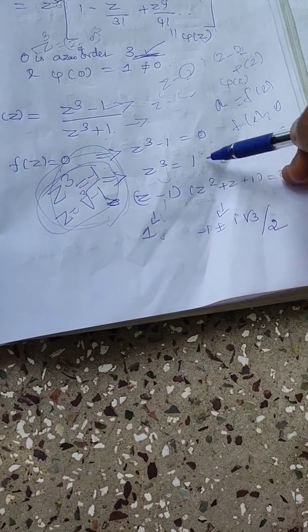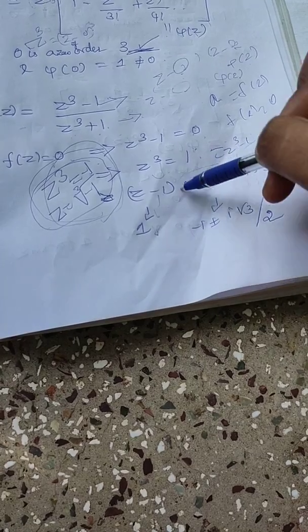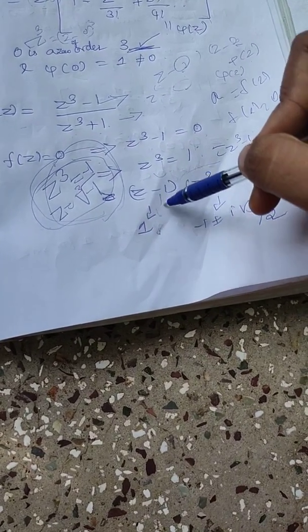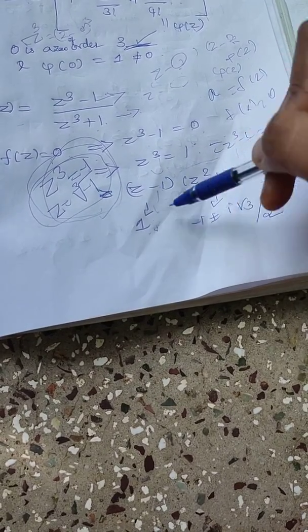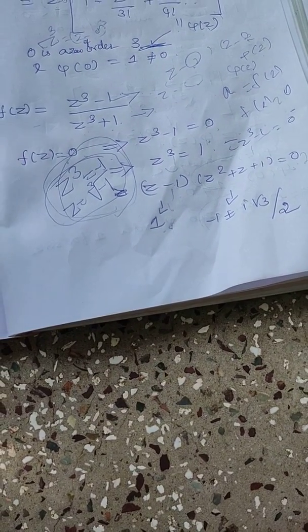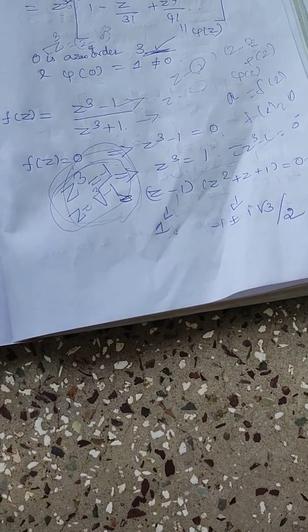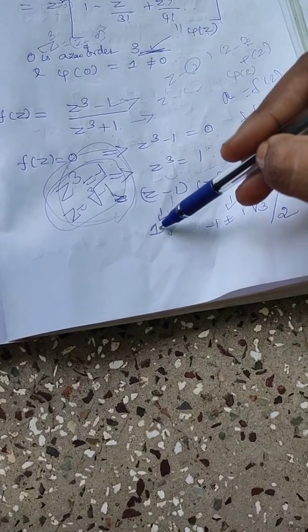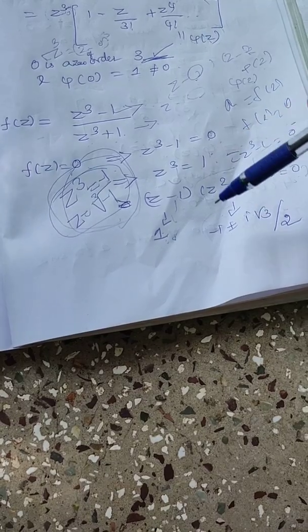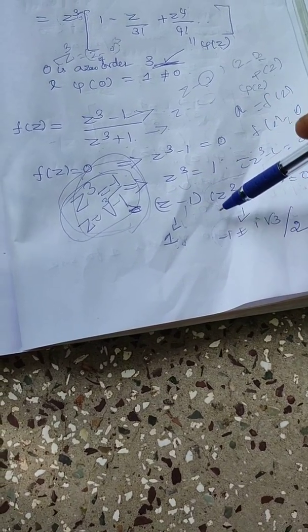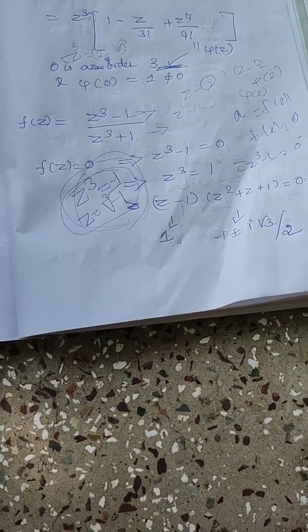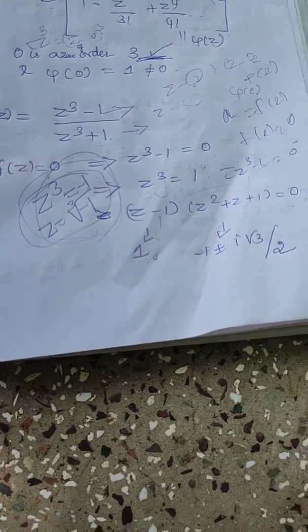So Z cube minus 1 is equal to 0. So here I have expressed Z cube minus 1 in terms of these two polynomials. And Z minus 1 is equal to 0. This is also equal to 0. Therefore Z is equal to 1. The roots of this equation are minus 1 plus or minus square root of minus 3 by 2. And which means it is having three roots, three zeros. And each zero is of order 1. So this is of order 1. This is of order 1. So in this way also we can find the zero of F of Z.